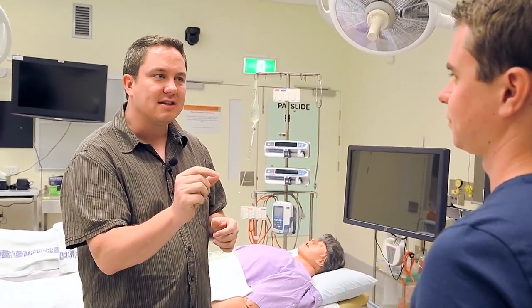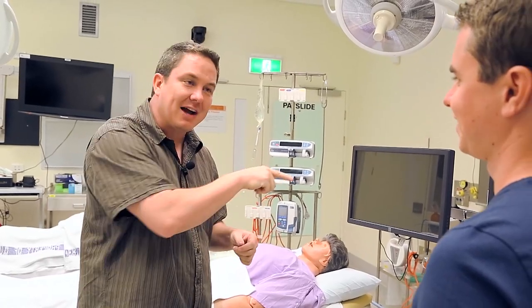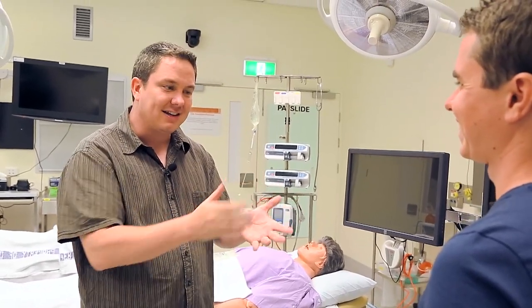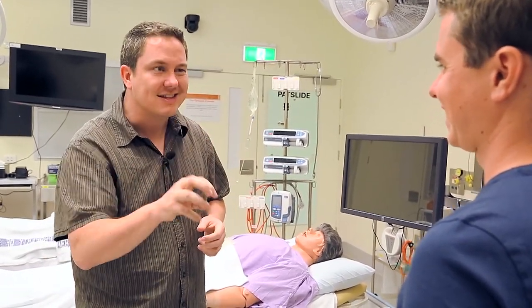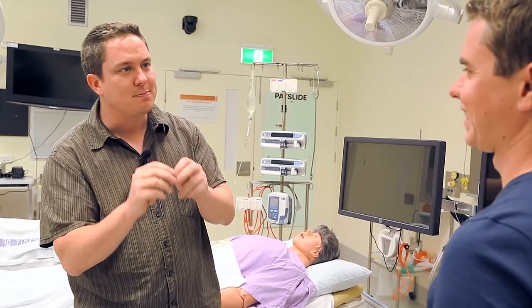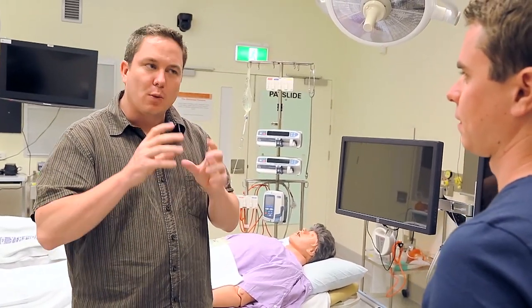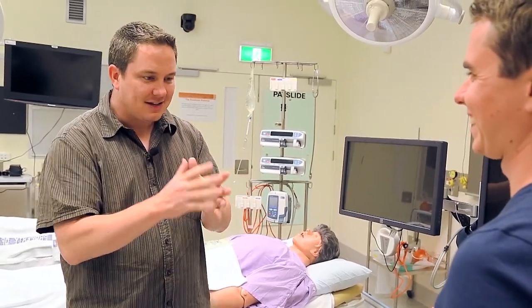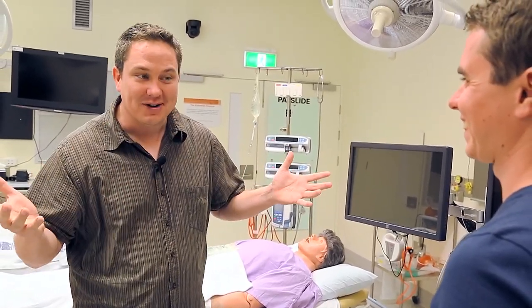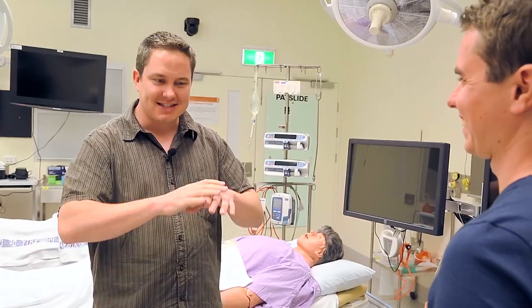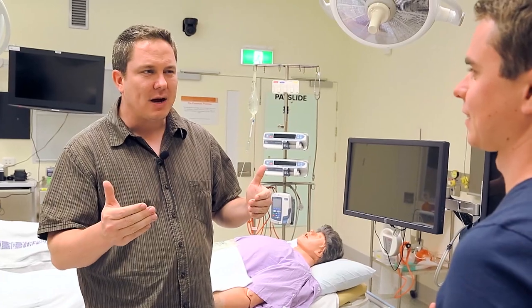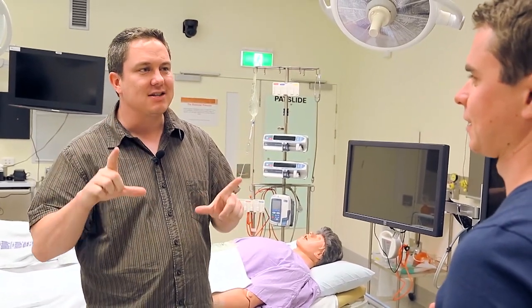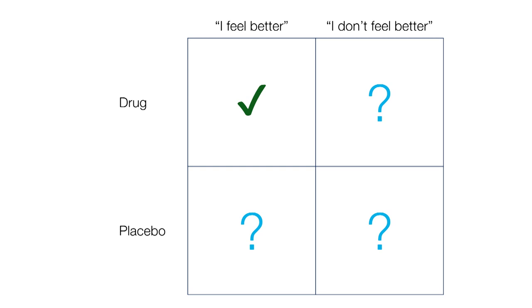All you're hearing about is that positive-positive cell: the number of times you did the thing, took the diet, did the treatment, and felt better as a result. All you're hearing about are the hits — the positive instances. Hopefully what we get out of this episode is to always ask: what about the other three cells? I want this to be at the tip of everyone's tongue when they see any claim — what about the other three cells? What information do I have, and what am I missing? If you represent it using a two-by-two table, it becomes immediately obvious.